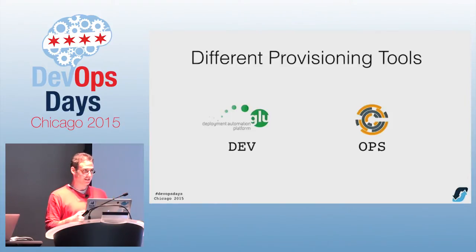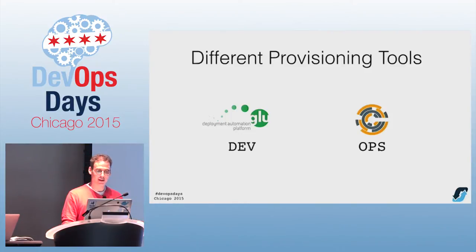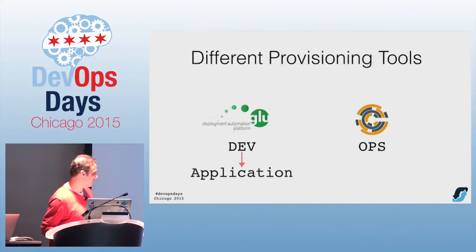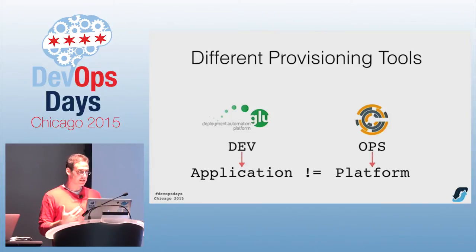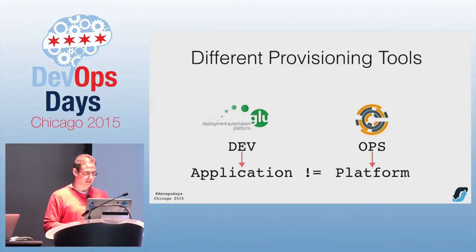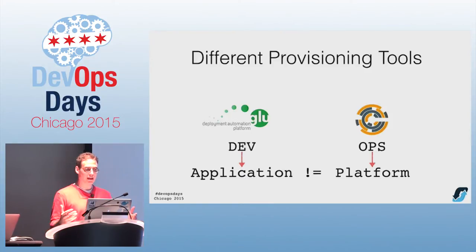Conway's law basically means your software is organized around the way your company is organized. Dev has their tool for deploying code and operations has their tool. We switched to Chef maybe three years ago from CFEngine. What happened was the pain and complexity around trying to get these two systems to properly align made people stop creating new services. So instead they just kept adding more and more to the services we had. Now, 15 years later, instead of one big giant application, we had hundreds of giant applications — and they were all complicated.